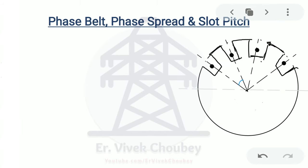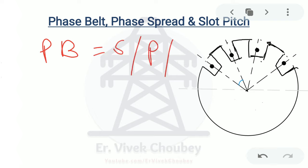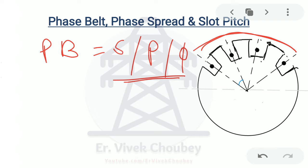Next we come to phase belt, phase spread, and slot pitch — these are allied concepts of the distributed type of winding. Phase belt may be defined as the number of slots under each pole per phase. So there is a phase winding with some slots and some poles on the machine, and each pole carries some number of slots. This number of slots per pole per phase — pertaining to one phase under each pole — is known as phase belt. In our example, the phase belt is 4.